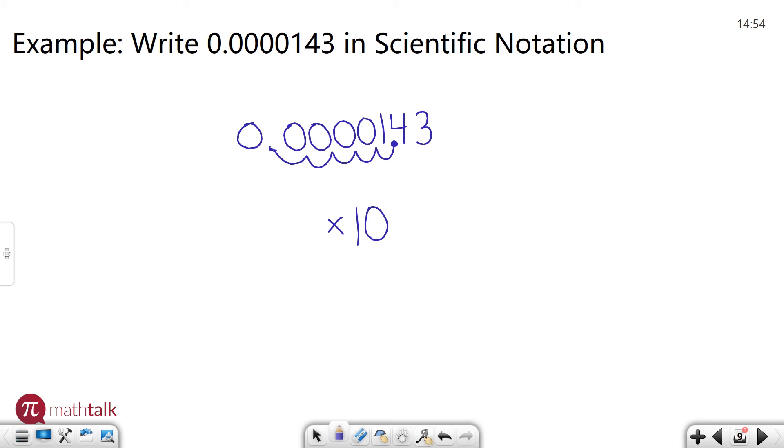Since we're talking about a very, very small number, my exponent has to be negative. And I moved it 5 spots, so it's a negative 5. Now I just need to figure out what's the number in front here. Well the number in front is the decimal you're left with after moving your decimal point. In this case, 1.43. And so 1.43 times 10 to the negative 5th is going to be the scientific notation of this very small decimal point.